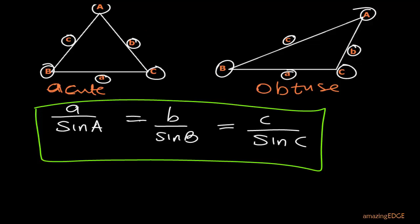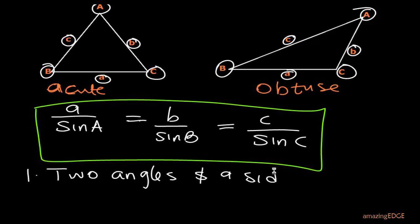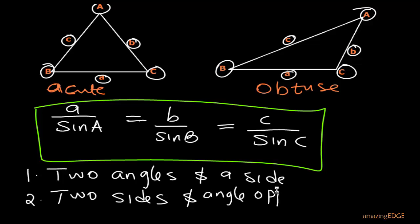We must also know what must be given before we use the sine rule. First, you can be given two angles and any one side — the sine rule will work. Alternatively, you could be given two sides and the angle opposite to one of those sides. Not just any angle, but the angle opposite to one of the sides. If either of these two conditions is met, you can use the sine rule.